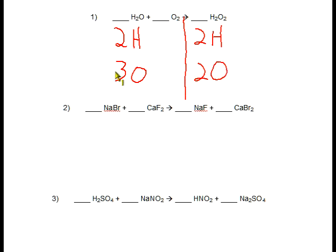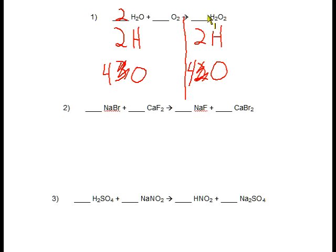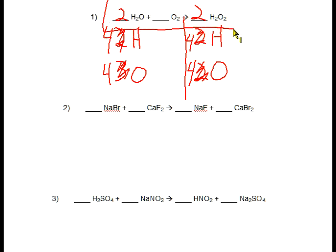So the easiest thing to do is find the lowest multiple of two, which would be four. So we want four oxygens on the left. To get that, we need a two here — two times one is two oxygens plus two oxygens is four. So we need four oxygens on the right, and a number times two equals four, so that would be two. Now our hydrogens: two times two is four hydrogens on each side. So that is the balanced chemical equation.